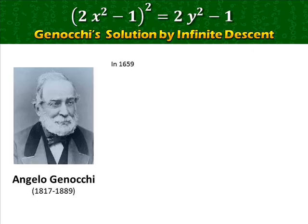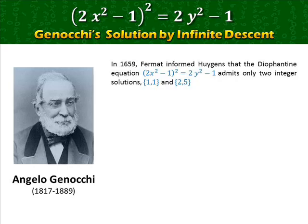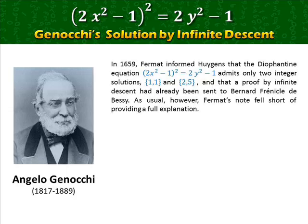In 1659, Fermat informed Huygens that this Diophantine equation admits only two integer solutions, and that a proof by infinite descent had already been sent to Bernard Frenicle de Bessy. As usual, however, Fermat's note falls short of providing a full explanation.